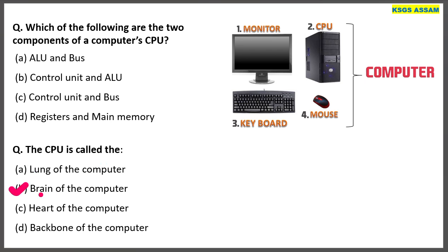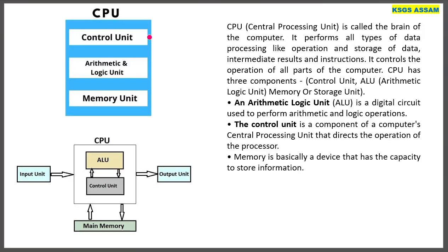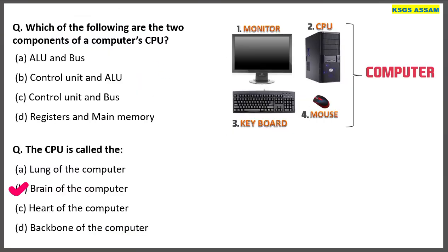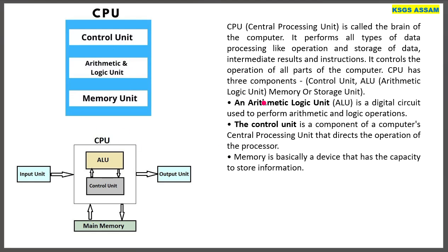The CPU has mainly three components: the Control Unit, the Memory Unit, and the Arithmetic and Logical Unit (ALU). These are the three components of the CPU: Control Unit, ALU (Arithmetic and Logical Unit), and Memory or Storage Unit.